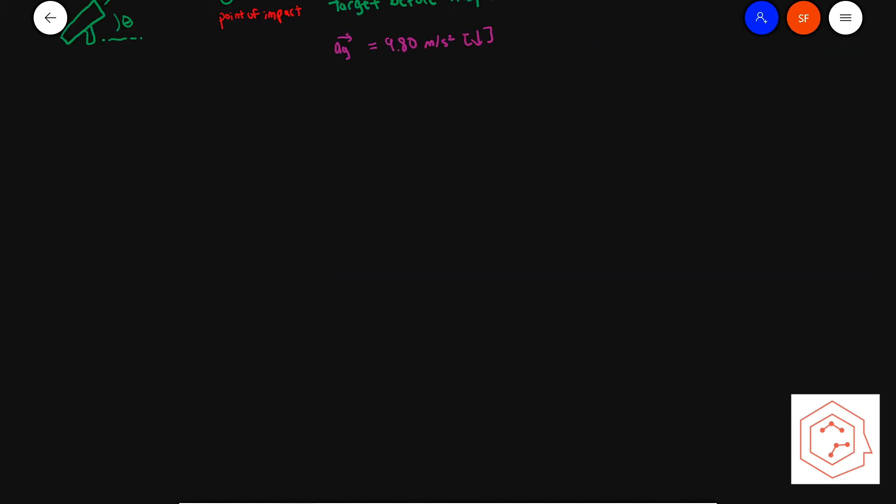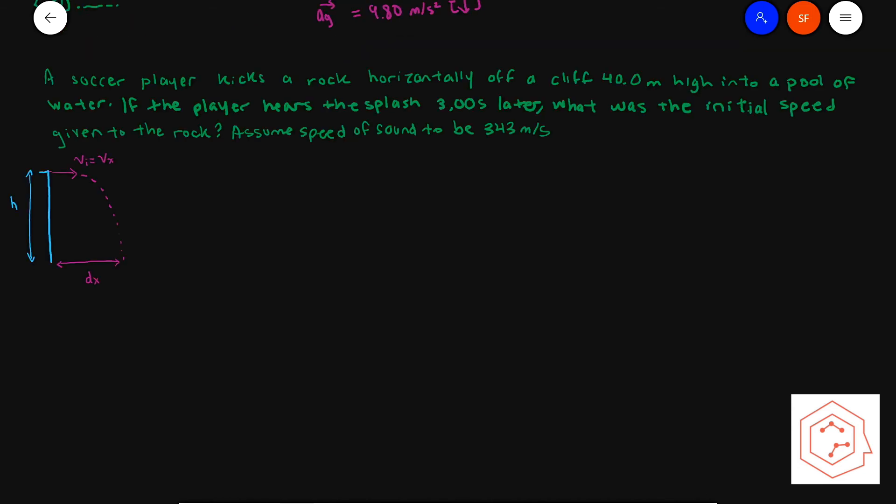The last question resembles one from the Serway textbook ninth edition. A soccer player kicks a rock horizontally off a cliff 40 meters high into a pool of water. If the player hears the splash three seconds later, what was the initial speed given to the rock? Assume the speed of sound to be 343 meters per second.